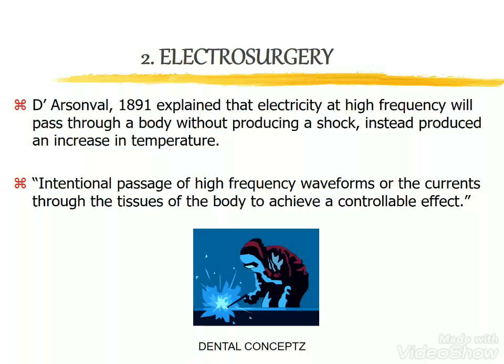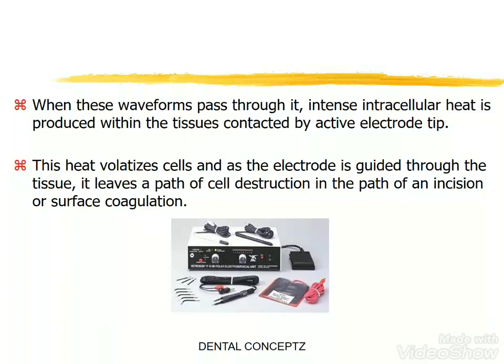In electrosurgery, D.R. Sonval in 1891 explained that electricity at high frequency will pass through a body without producing a shock but instead produce an increase in temperature. The basic concept is the intentional passage of high frequency waveforms or currents through tissues of the body to achieve a controllable effect. When these waveforms pass through tissue, intracellular heat is produced at the active electrode tip, which volatilizes cells as the electrode is guided through the tissue, leaving a path of cell destruction in the form of an incision or surface coagulation.